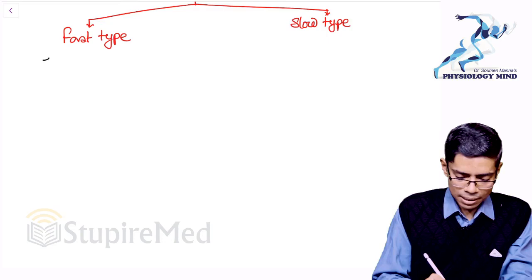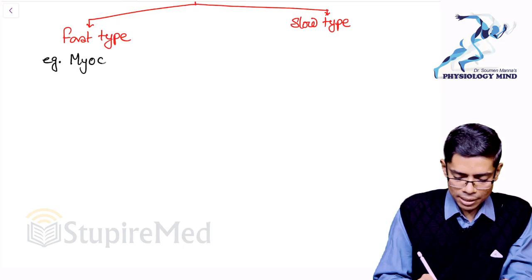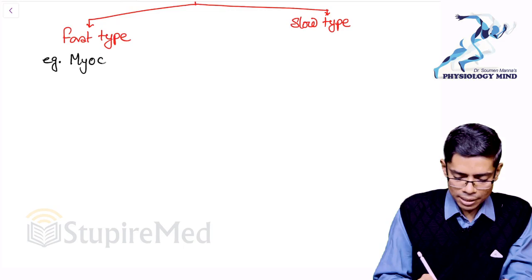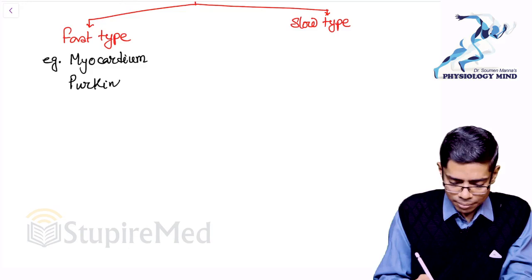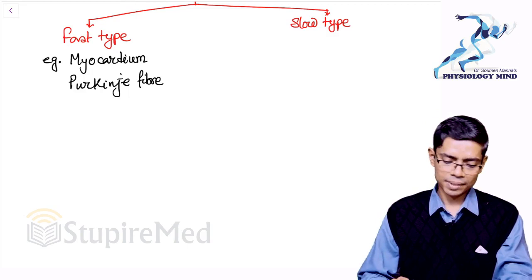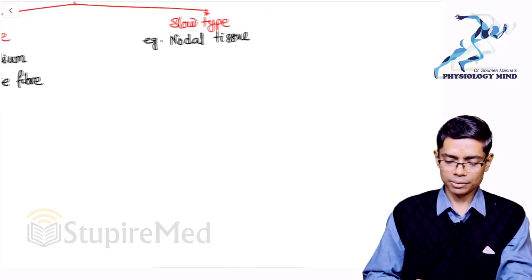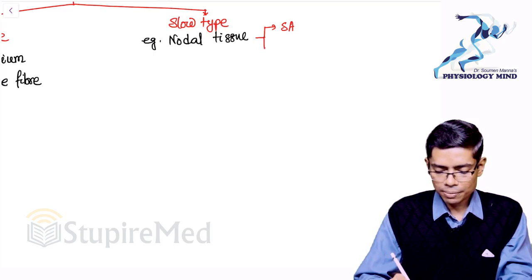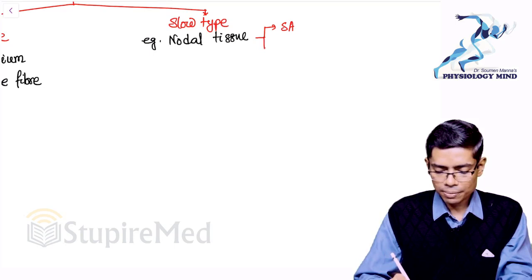Fast-type action potential is generally seen in the myocardium — that is, in atrial and ventricular muscle. It is also seen at the level of Purkinje fibers. Slow-type action potential, on the other hand, is seen at the level of nodal tissue of the heart — specifically at the SA node and AV node.